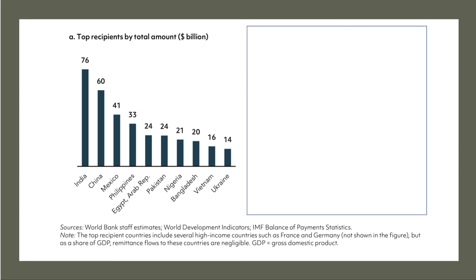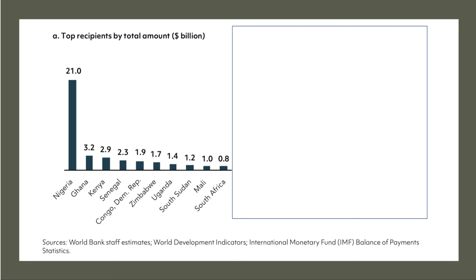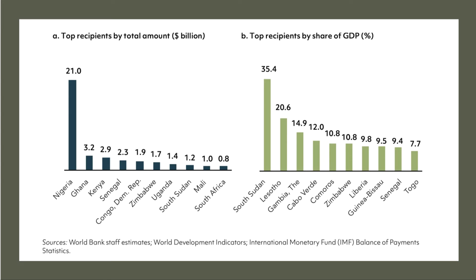India and China received the biggest remittances globally in 2019 — India $76 billion, China $60 billion. Of course, the percentage of GDP table shows that most countries at the top, like Tonga, are fairly small economies, so remittances are a big percentage of GDP. In sub-Saharan Africa, Nigeria received $21 billion of remittances, far in excess of any other country including Ghana, Kenya, and Senegal. Measured as a percentage of GDP, South Sudan had more than one-third of their GDP as remittance income, down to Senegal and Togo at around 10%.